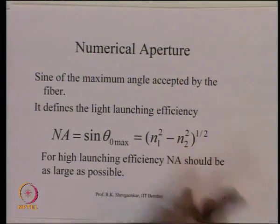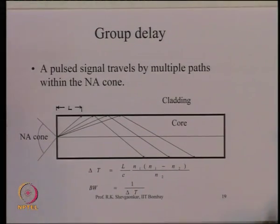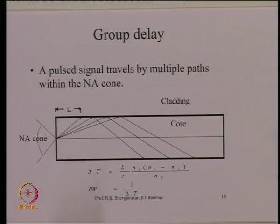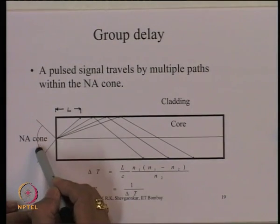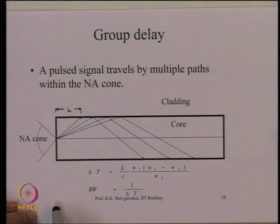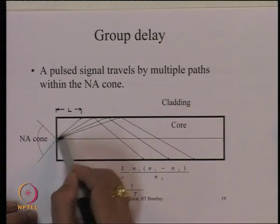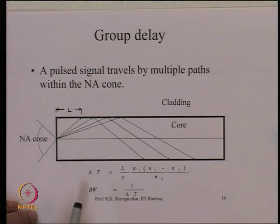If instead of a continuous light source you use pulsed light to carry information, the implications of the refractive indices change. Numerical aperture addresses efficiency, but another issue is data rate. Since any ray launched within the acceptance cone can be totally internally reflected and guided, rays travel at different angles and thus travel different distances, causing them to arrive at different times.